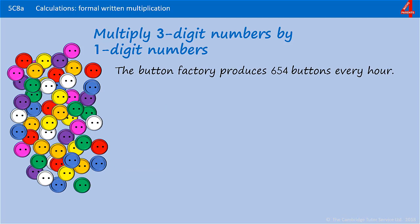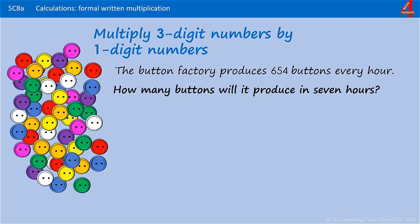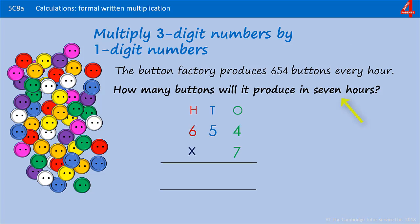Generally with these kinds of calculations you get a word problem to go with it, so I'm going to demonstrate a couple of those so you get the idea. The button factory produces 654 buttons every hour. How many buttons will it produce in 7 hours? The first thing here is to work out what calculation you're expected to do — we have 654 buttons every hour and we're going to multiply that 654 by 7.